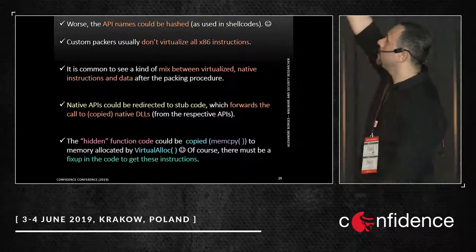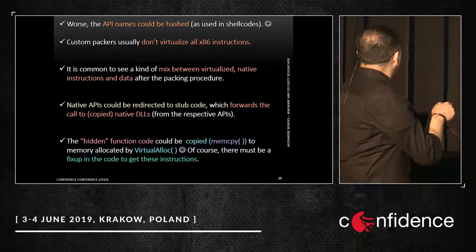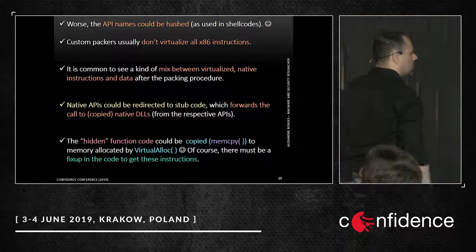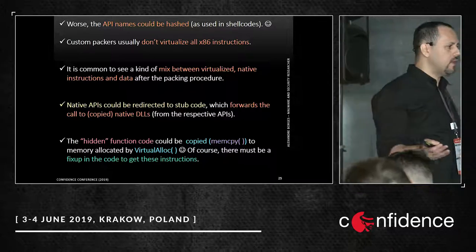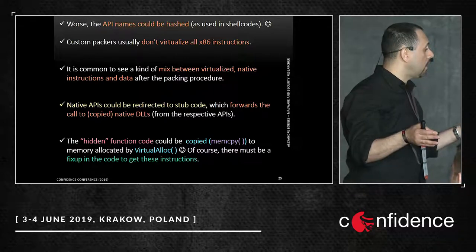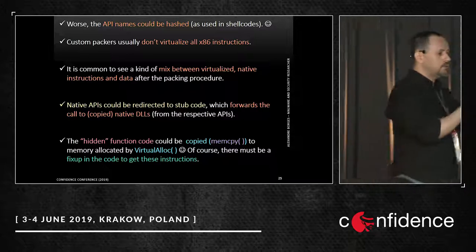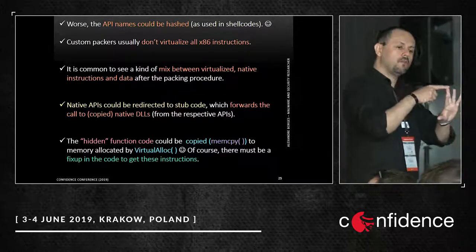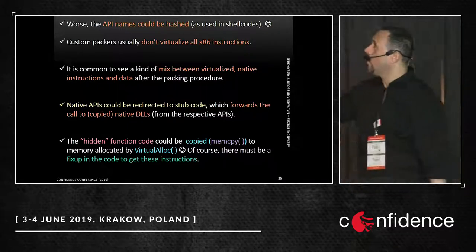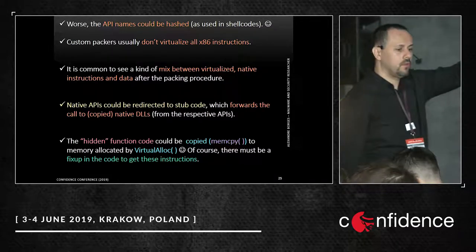Most API names are hashes, like a shellcode. According to my experience, these packers don't virtualize all instructions. For example, suppose I have 100 instructions in x86 processors — these packers virtualize only some of them. There is a series mix between data, virtualized instructions, and non-virtualized instructions, and everything is mixed over the code. Most API calls are forwarded to a stub, and from this stub forwarded to the original API.